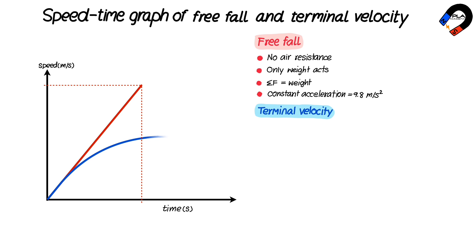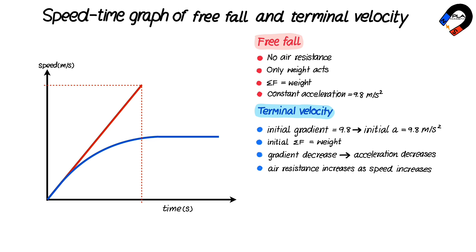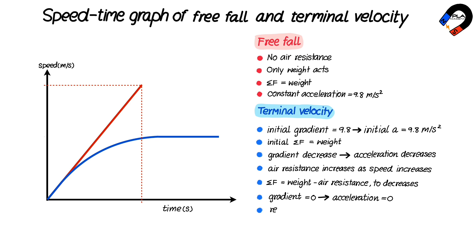The speed-time graph of a ball moving through air to reach the ground from the same height, where air resistance affects the motion, reaches a terminal velocity as shown. The gradient of the graph starts at 9.8 meters per second squared because only weight acts on the ball downward. As time passes, the gradient decreases, showing that the acceleration decreases, because air resistance acts upward and increases as speed increases. The resultant force is weight minus air resistance, decreasing until the gradient reaches 0, showing that the acceleration is 0 and the ball reaches terminal velocity when air resistance equals weight and the resultant force is 0.